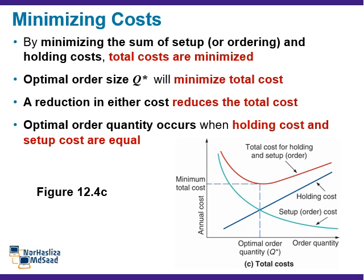The objective of most inventory models is to minimize total costs. With the assumptions given, the significant costs are setup costs and holding costs. By minimizing the sum of setup and holding costs, total costs are minimized. The optimal order size quantity will minimize total costs, and a reduction in either cost reduces the total cost. The optimal order quantity occurs when holding costs and setup costs are equal.